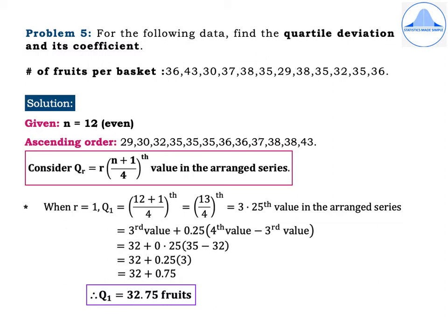The first step is to arrange the data in ascending order. So we have: 29, 30, 32, 35 (repeated three times), 36 (repeated twice), 37, 38 (repeated twice), and 43.